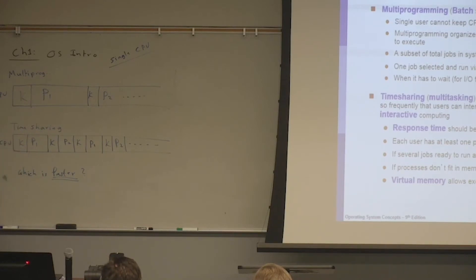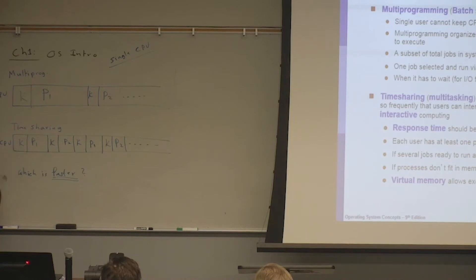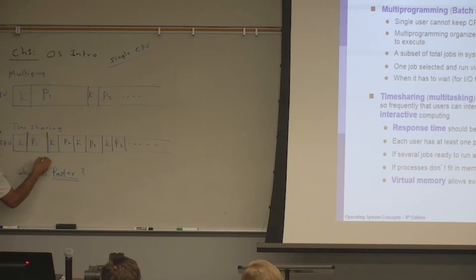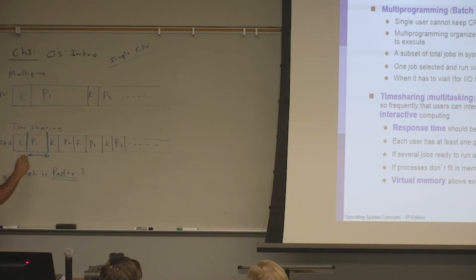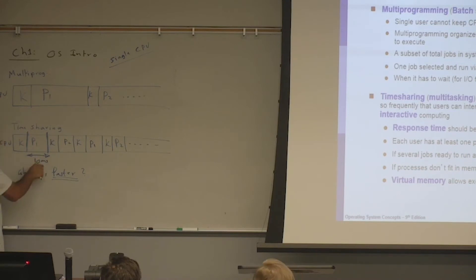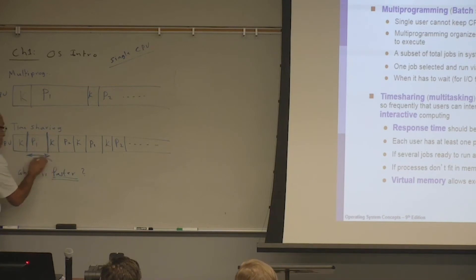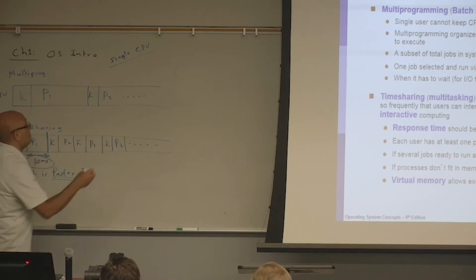The big question is: how does the operating system implement time-sharing? The operating system needs a mechanism for setting a limit on the time that process number one gets. When the kernel gives the CPU to P1, it needs a mechanism to get the CPU back after a certain time period determined by the kernel — for example, 10 milliseconds. This is implemented using a timed interrupt. Whenever there is an interrupt, the kernel gets control.